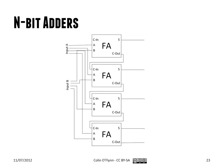Each full adder is adding a single bit in the column, so carry out goes to carry in, carry out goes to carry in, carry out goes to carry in. A and B form a bus — the A inputs all go to A, the B inputs all go to B — and then we have the sum and a final carry. Chaining full adders gives you an n-bit adder.